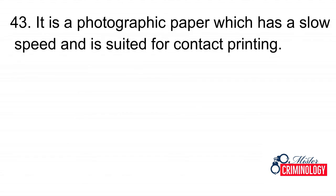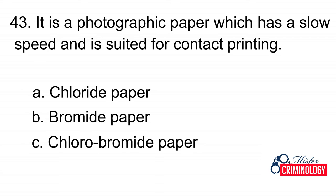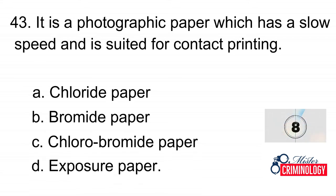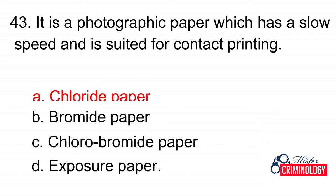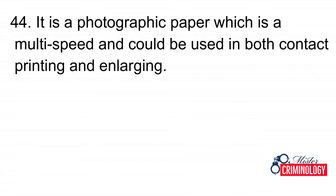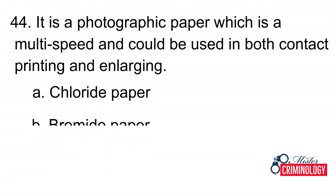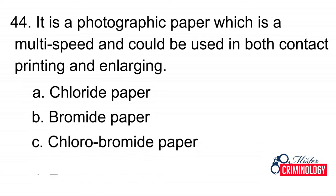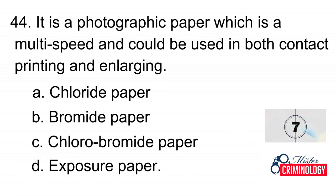Question 43: It is a photographic paper which has a slow speed and is suited for contact printing. A. Chloride paper, B. Bromide paper, C. Chlorobromide paper, D. Exposure paper. Answer: C. Chlorobromide paper.